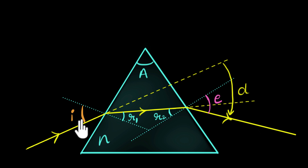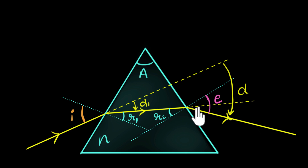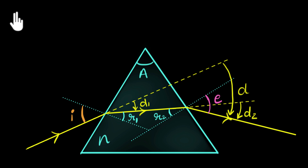If you see carefully, the ray of light is deviated twice — once over here, second time over here. Over here, this was the initial direction and the ray of light has bent downwards. So this angle will represent the first angle of deviation, D1. Similarly over here, the ray of light was going this way but again it got deviated downwards. So this will be the second angle of deviation, D2. And so our total deviation D becomes D1 plus D2.